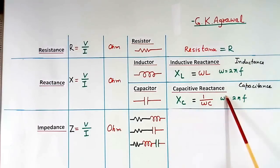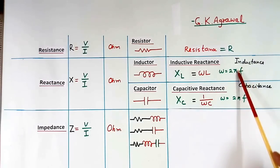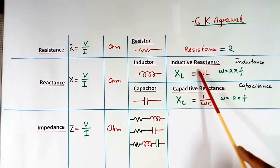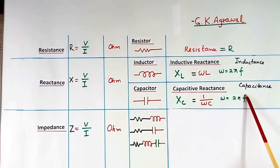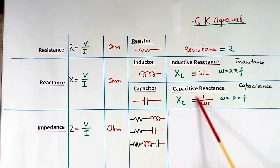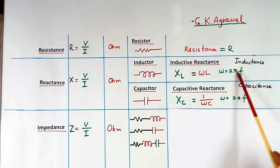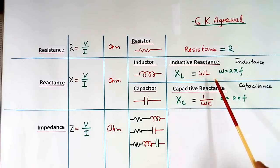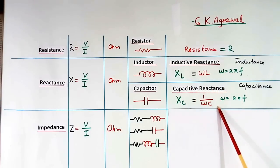In these two cases, here if frequency F is more, then the value of inductive reactance will be more. But in the capacitive case, if F is more, this value will come down. So by increasing the value of frequency, inductive reactance will go up and capacitive reactance will come down.